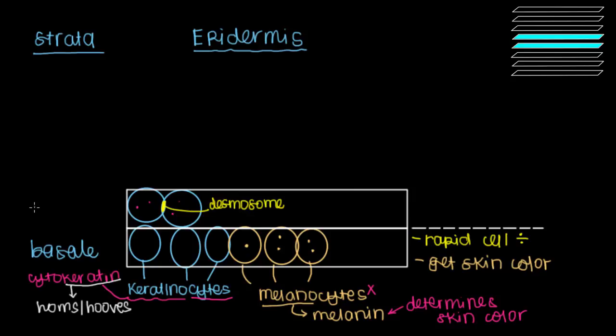A desmosome. And this is involved in what gives this layer its name. So this layer that sits above the stratum basale is called the stratum spinosum. The stratum spinosum. Which, as you might guess from the fact that we call this our basal layer, this stratum is our spiny layer. And the reason why we call it that is because of the desmosome.